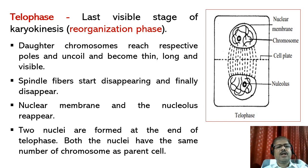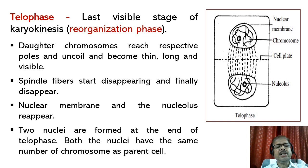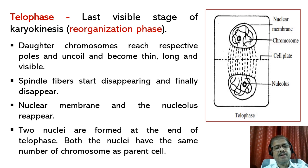Telophase: at this phase, the daughter chromosomes reach their respective poles, uncoil, and become thin, long, and visible. The spindle fibers start disappearing and finally disappear completely. The nuclear membrane and nucleolus reappear, and two nuclei are formed at the end of telophase. Both nuclei have the same number of chromosomes as the parental cell. It is the last visible stage of karyokinesis and is also known as the reorganization phase.